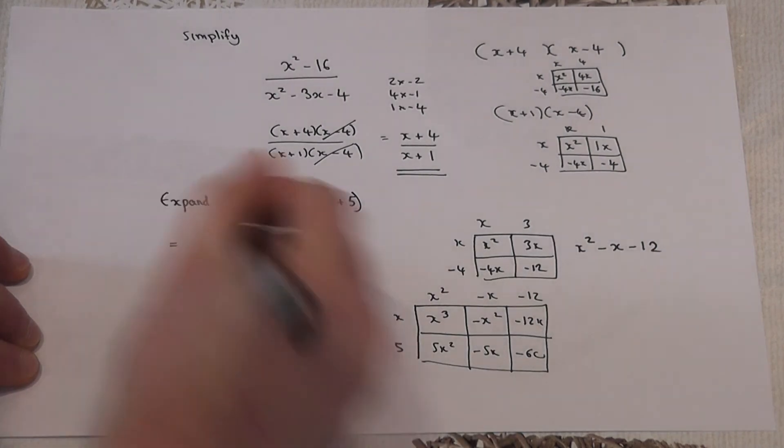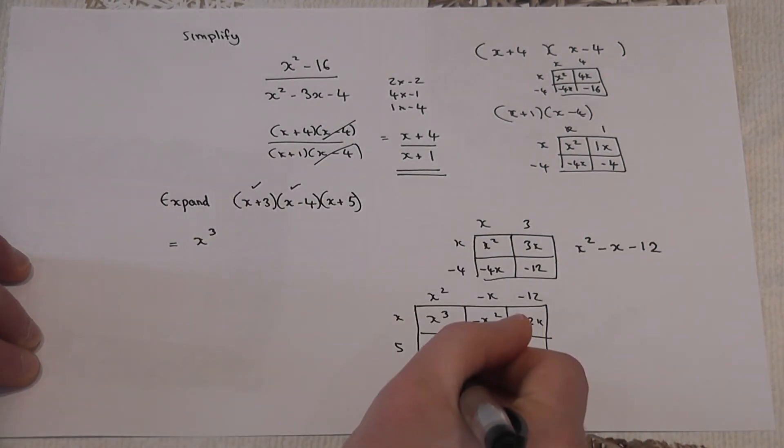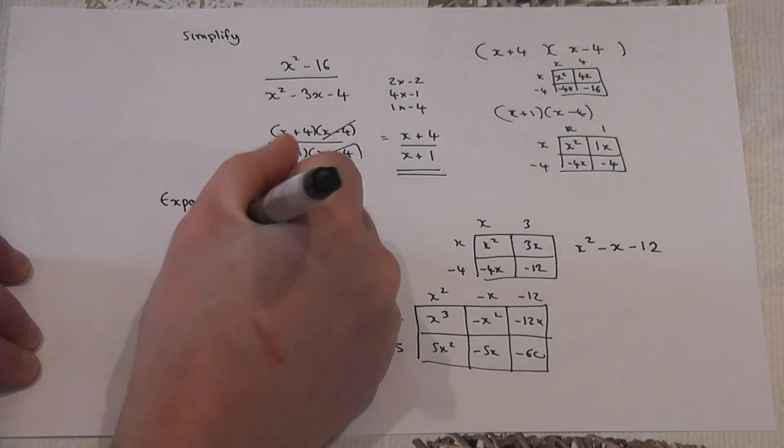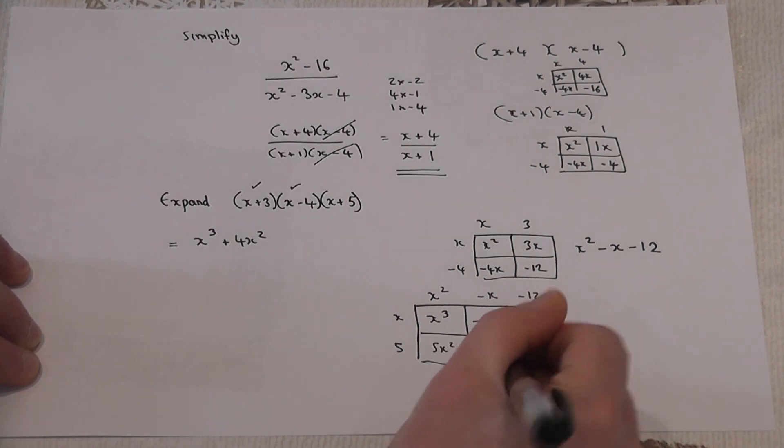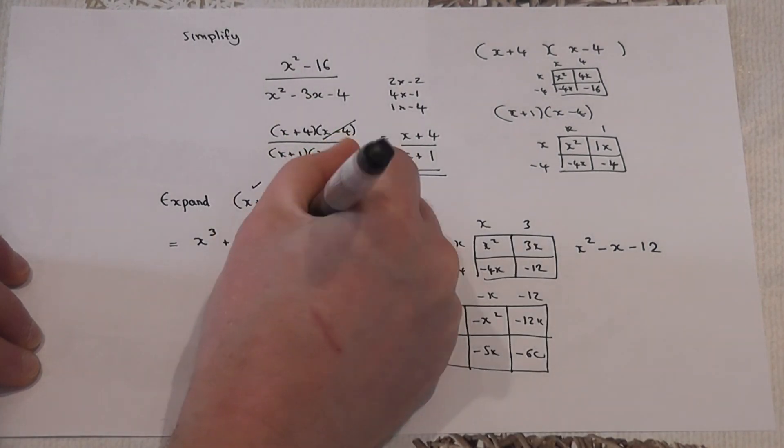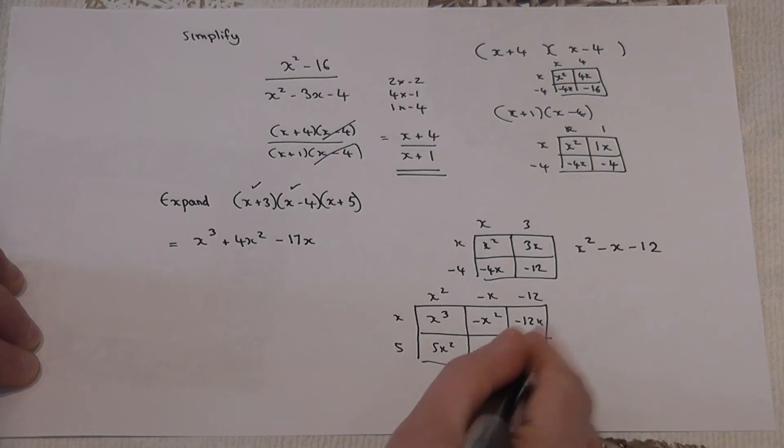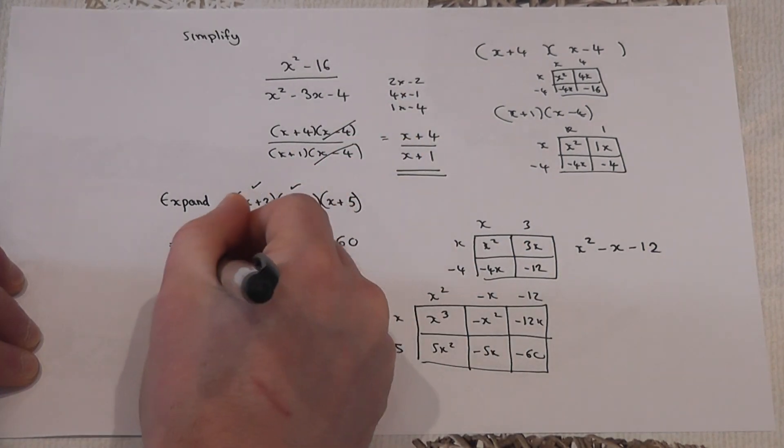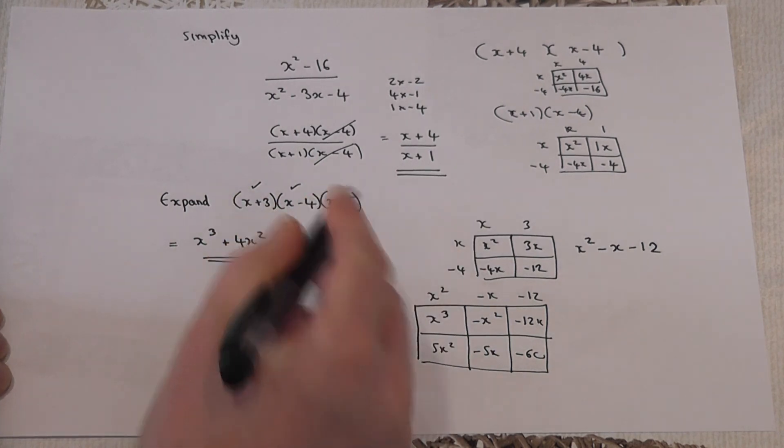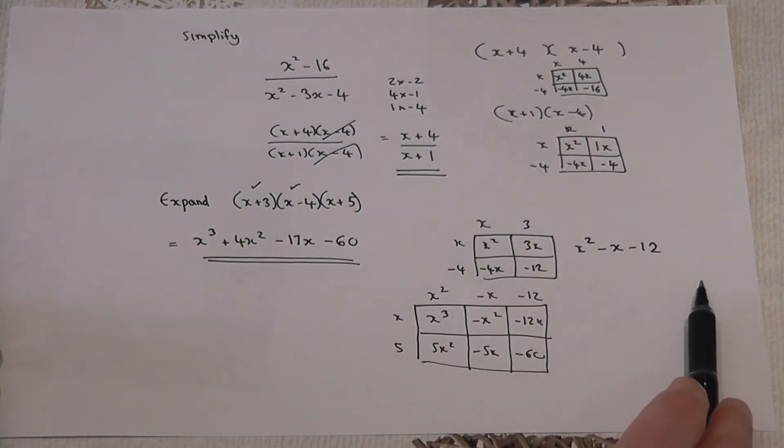Then the answer therefore is x cubed, 5x squared take away 1x squared is 4x squared, minus 5x take away 12x is minus 17x, and last but not least I've got a minus 60. So therefore, these three brackets expand to give this as an answer.